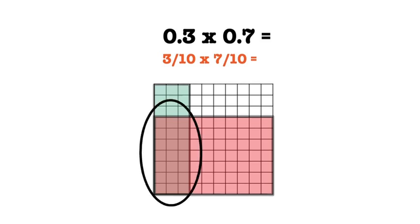To write our answer, we first need to consider how many squares are on the 10 by 10 grid to determine our denominator. There are 100 squares on the grid, so that means that our denominator for our answer will be 100.